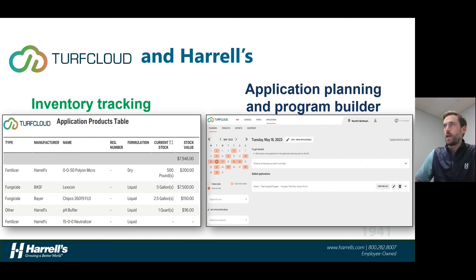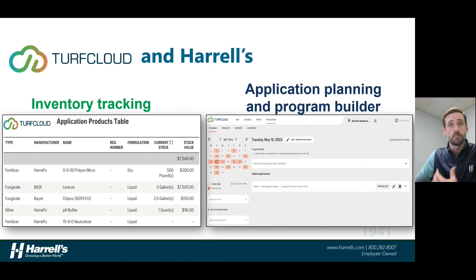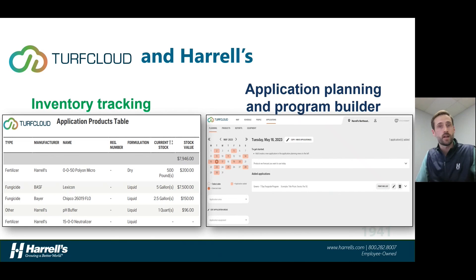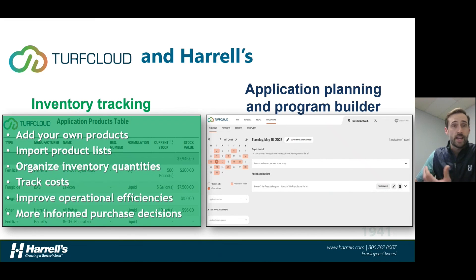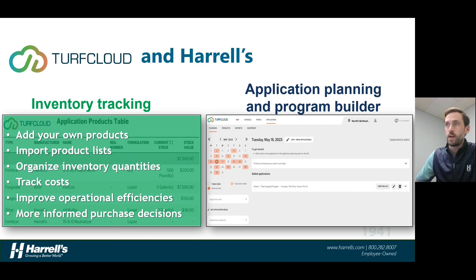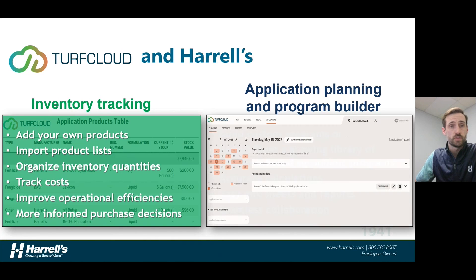With the TurfCloud and Harrells partnership, we have inventory tracking built into the program and an application planning and program builder. As you go to build your program, you can cross-reference and say, do I have enough of product X, Y, or Z to make this application actually happen? With inventory tracking, you can add your own products, and we'll also have a default set of lists of common products associated with your region preloaded into your account. You can import your own product list, organize your own inventory quantities, track costs over time, improving your operational efficiencies while making more informed purchase decisions.